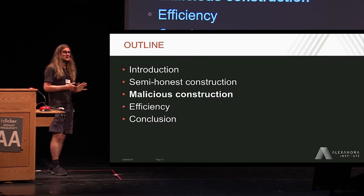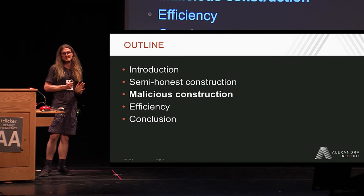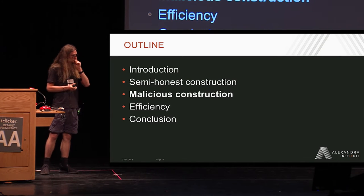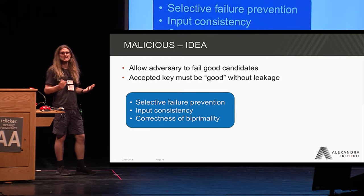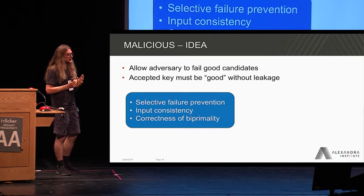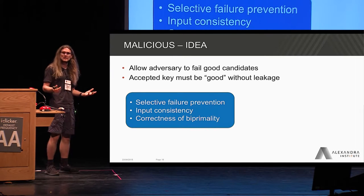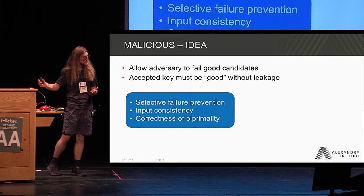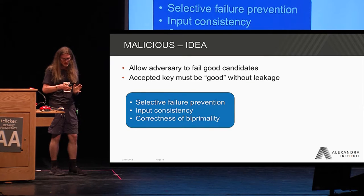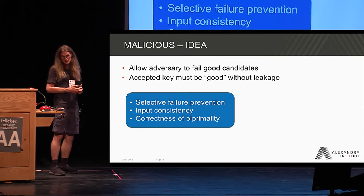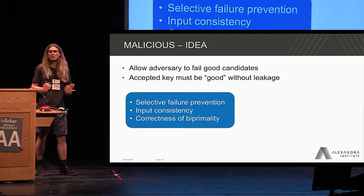That was a brief outline of the semi-honest construction. As you may have noticed, a lot of what we do here is based on previous work — that's completely intentional because our main contribution is how we take this and turn it maliciously secure. Looking at what can go wrong in the semi-honest protocol when parties act maliciously: there's the issue of selective failure, the issue of not staying consistent with what you pick as a prime share throughout the different stages of the protocol, and the problem of correctness of biprimality. The main idea is that we give the adversary slightly more power than normal in a way that's basically useless to him.